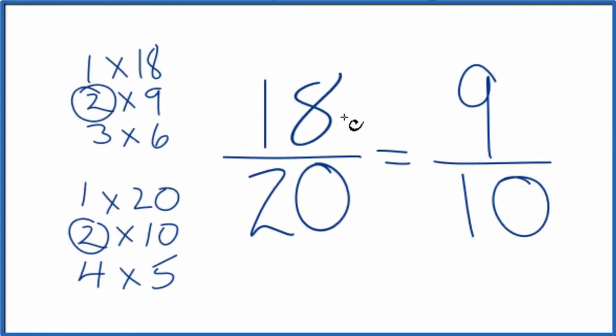These are equivalent fractions. If you divide 18 by 20 or 9 by 10, you'll get the same number, 0.9. It's just that we've reduced 18/20 down to 9/10.